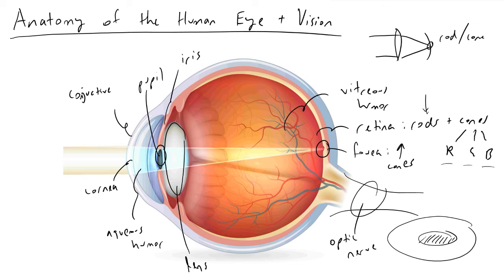Something called the sclera — and the sclera is the white part of your eye and its job is to serve as a muscle attachment site. Because we're able to attach muscles onto the sclera, it allows our eyes to move from side to side and up and down. This helps us be more fit to our environment.